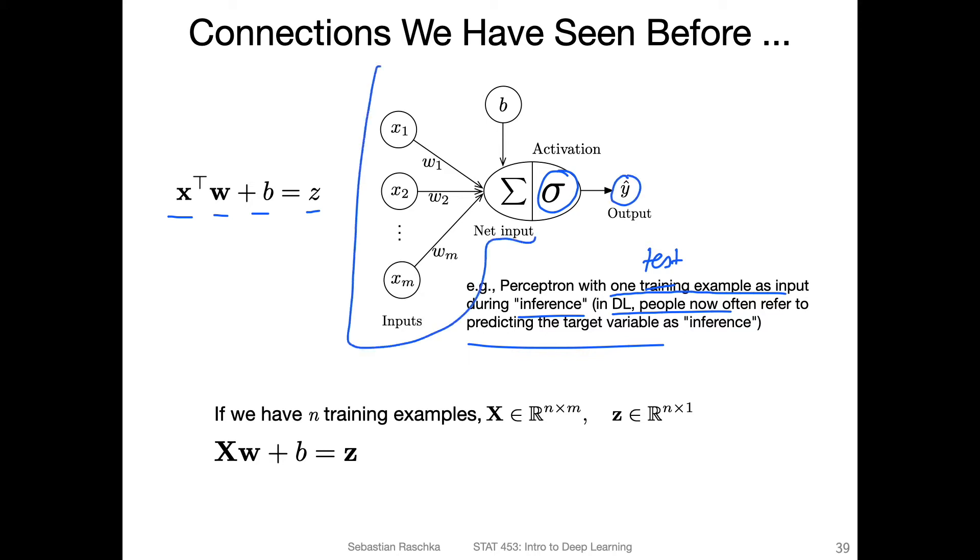So here, this part is doing this linear algebra computation: x transpose dot w plus b. Now this is for one data point. We can actually also extend that to multiple data points. If we want to do that for multiple data points, like n training examples or n test examples, we can use a design matrix for representing the data, an n times m dimensional design matrix.